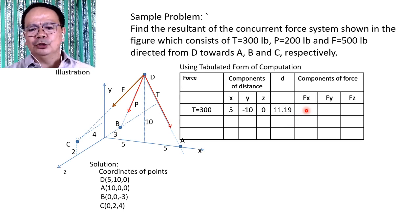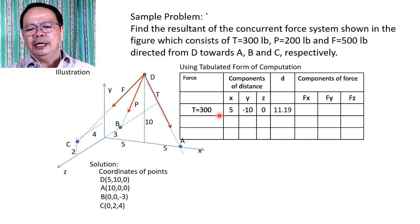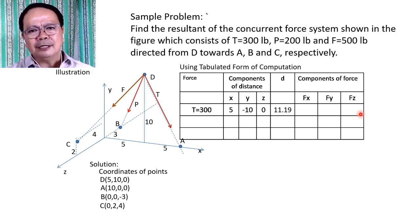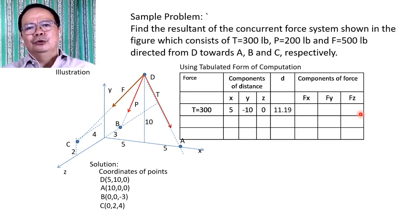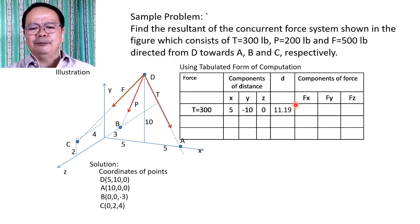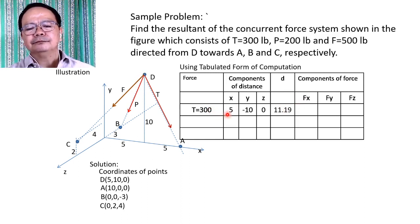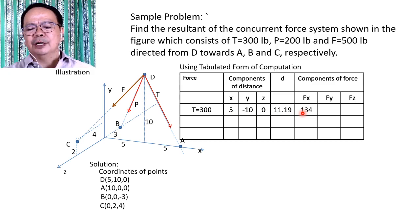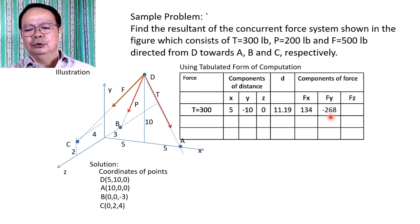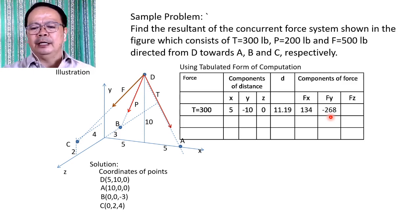After computing the distance d for force T, we compute the components Fx, Fy, and Fz using the concept that the component of the force is proportional to the component of the distance. Hence, Fx = 300 × 5 / 11.19 = 134. Similarly, Fy = 300 × (−10) / 11.19 = −268, and Fz = 0.